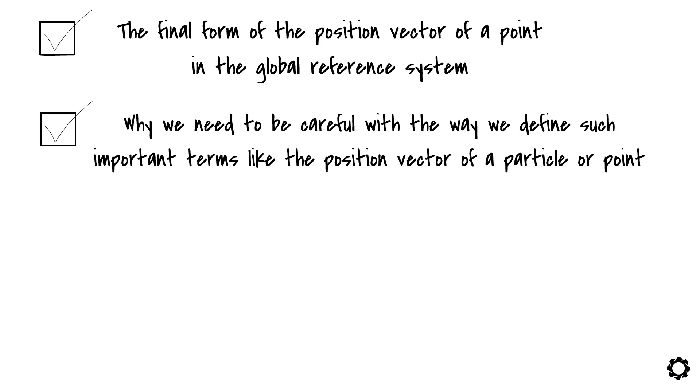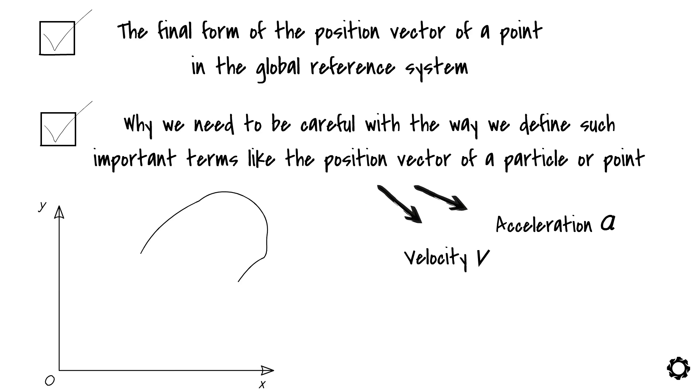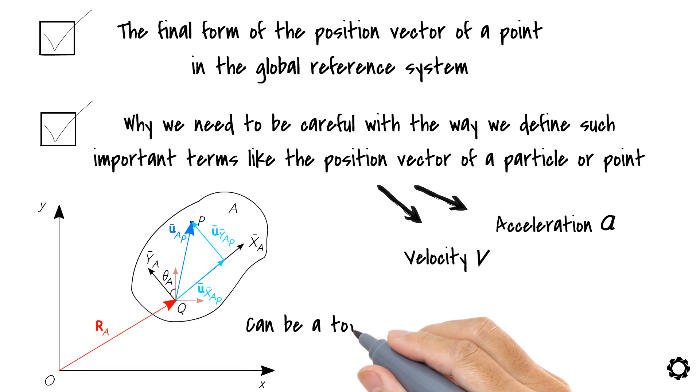And it was mainly because its derived quantities, velocities and accelerations depend fully on it. Even more important is not to mix vectors represented in the local and global coordinate systems. It can be a total mess.